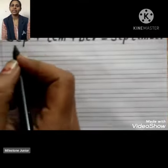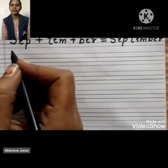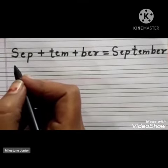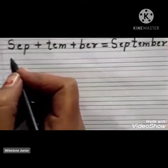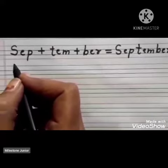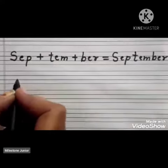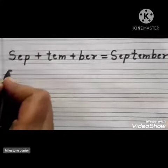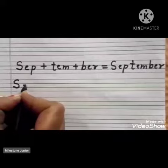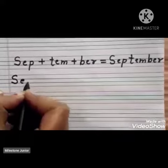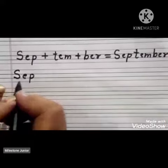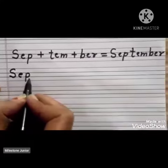Now we will write it in our copy. Children, I will teach you how you can learn and write the spelling of September. Let's start. First we will write S, then E and P. It will become SEP.